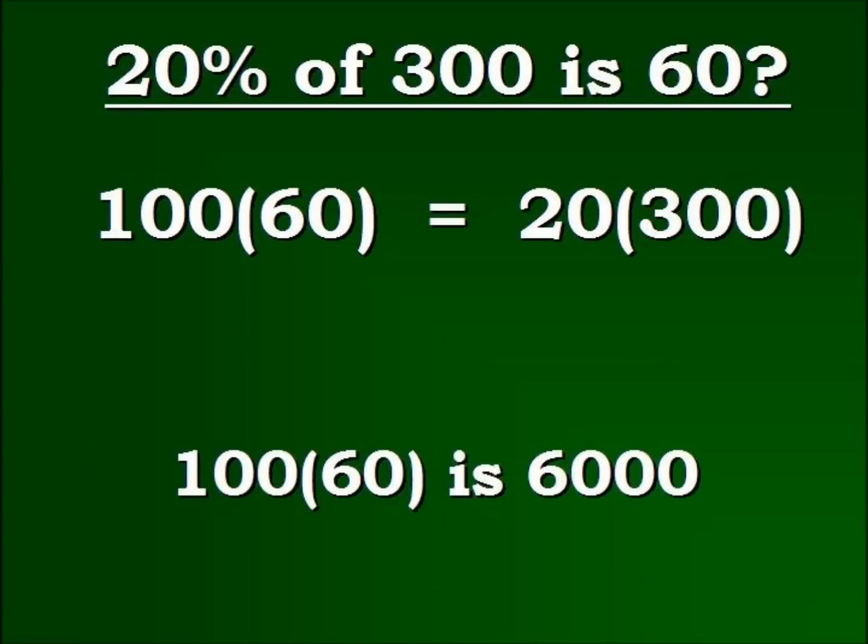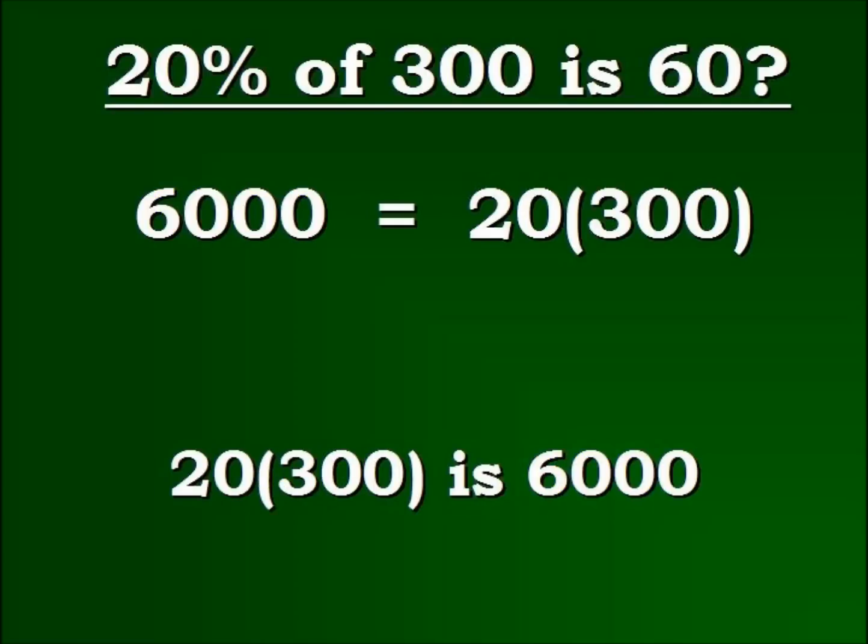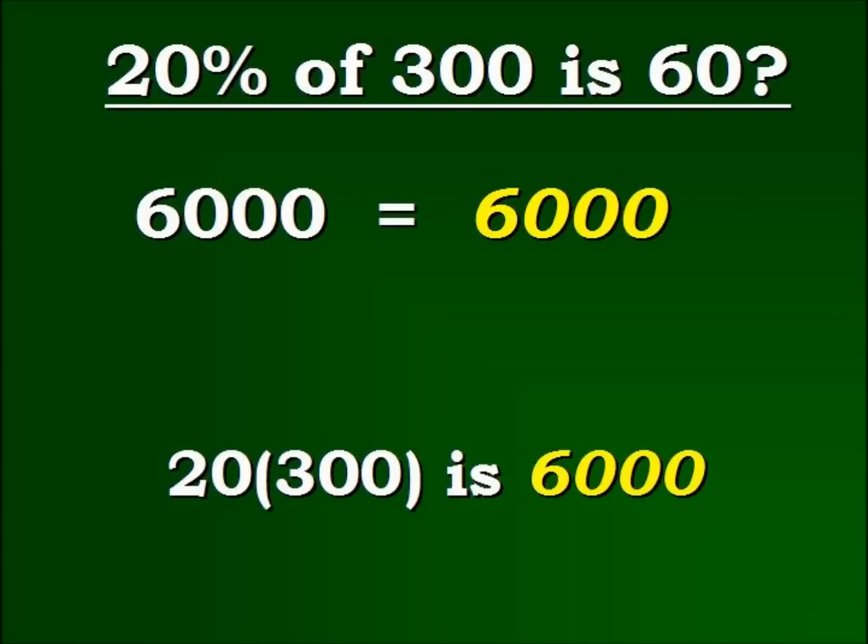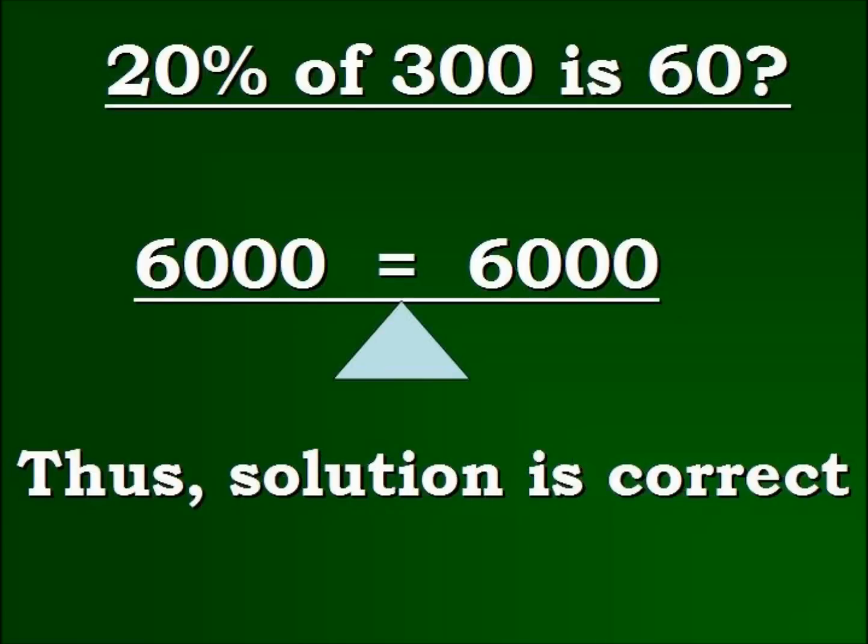Now, we have this new equation. We're going to simplify both sides. 100 times 60 is 6,000. Now, for the right side, 20 times 300 is 6,000 also. So, that's a true statement. 6,000 does equal 6,000. And, again, the equation is balanced, so the solution worked. That's the end of the second video. Thank you.